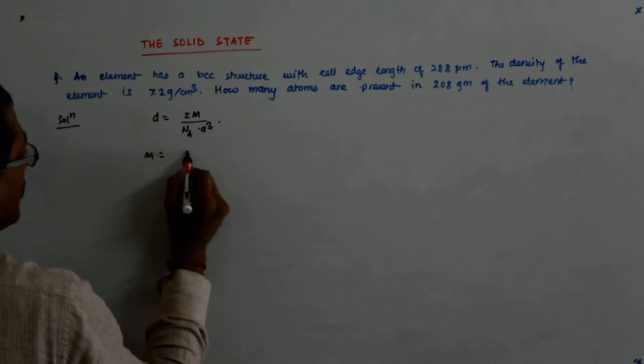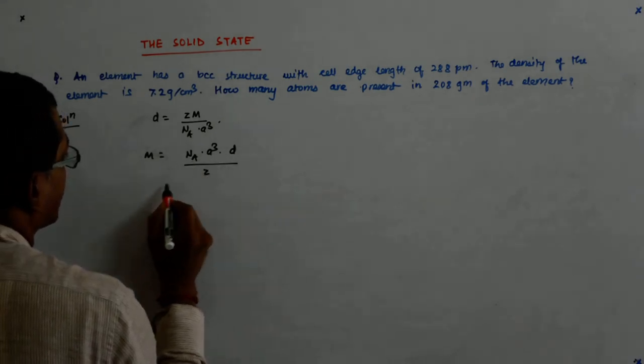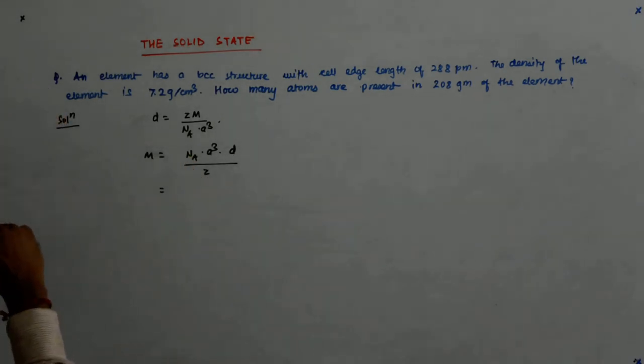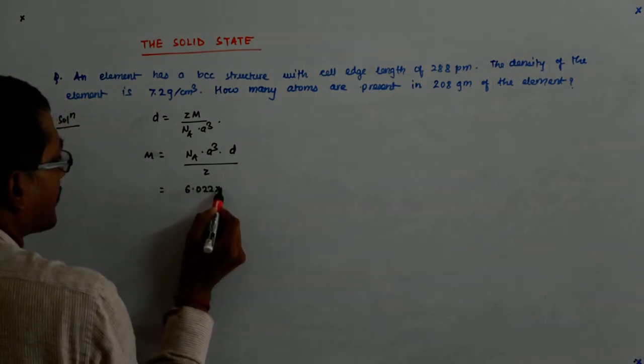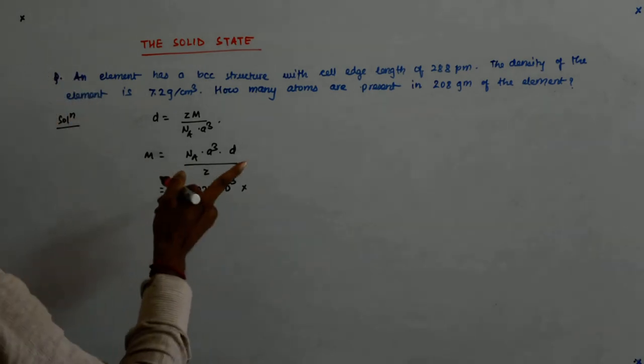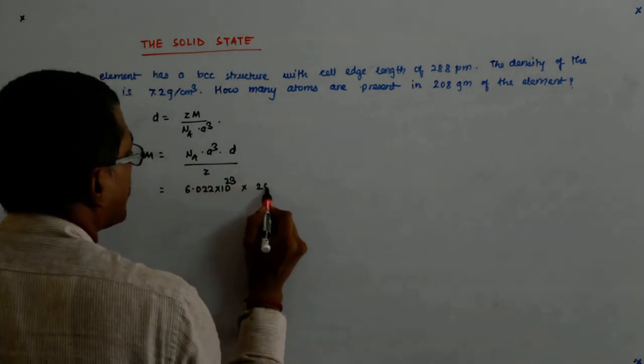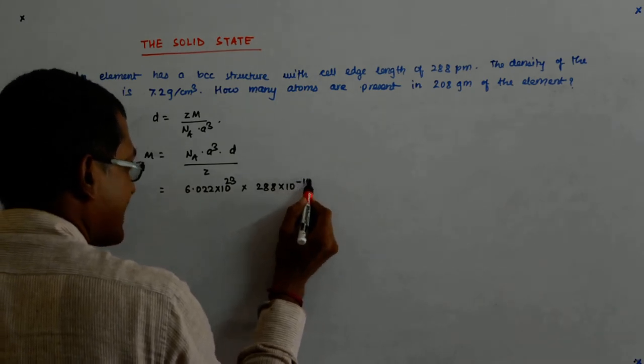Now what is NA? That is 6.022 into 10 to the power 23. A cube is 288 into 10 to the power minus 10.